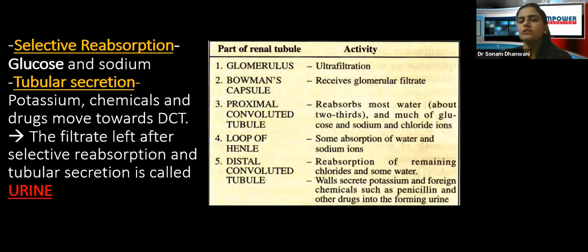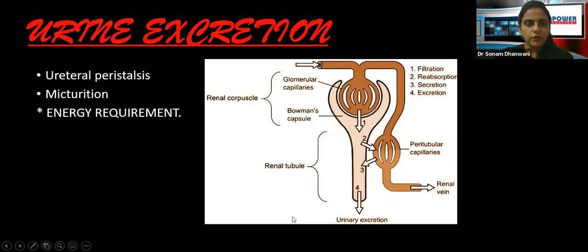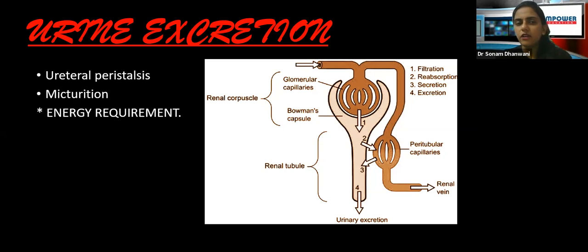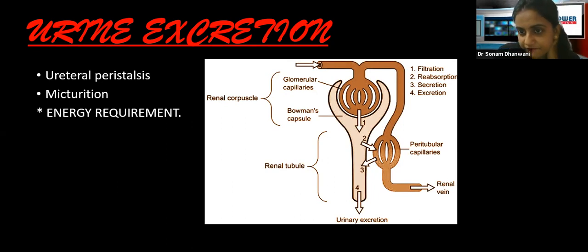You can remember this whole process using the table. Write it down in proper sentence form to make it easier. Now, urine excretion involves ureteral peristalsis. We've heard the word peristalsis while studying the digestive system — it refers to movement. Here, ureteral peristalsis means the movement of urine via the different organs of the urinary system.